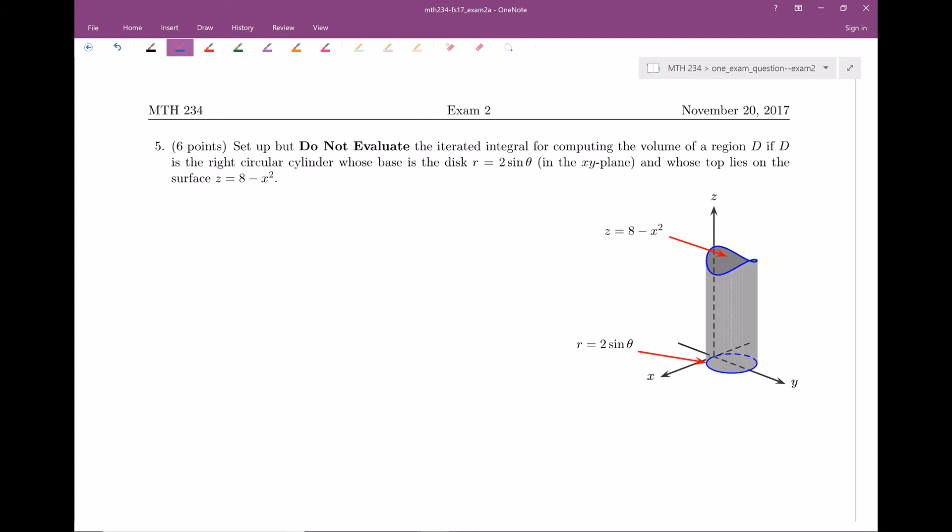Let's go ahead and read this problem. Set up, but do not evaluate, the iterated integral for computing the volume of a region D, if D is the right circular cylinder, whose base is the disc r equals two sine theta in the xy plane, and whose top lies on the surface z equals eight minus x squared.